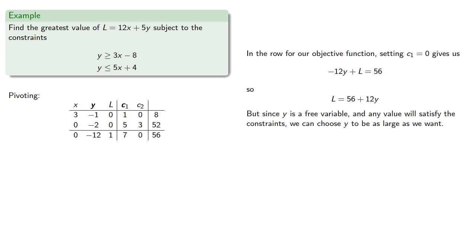In the row for our objective function setting C1 equal to zero gives us, but since y is a free variable and any value will satisfy the constraints, we can choose y to be as large as we want. This makes L as large as we want, and so L is unbounded and there's no maximum value.